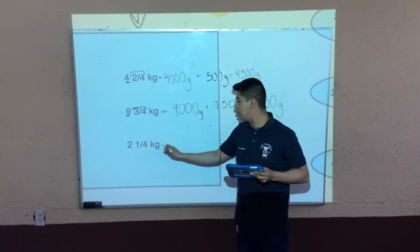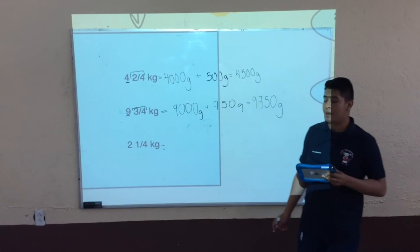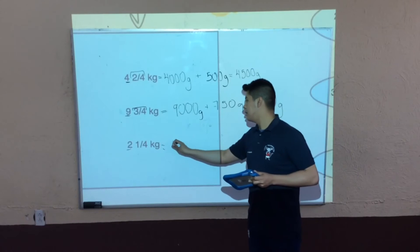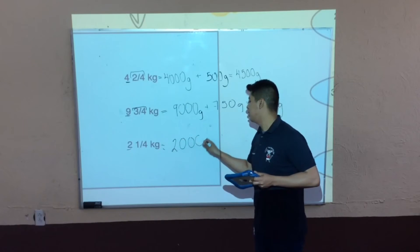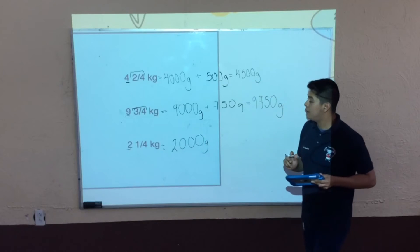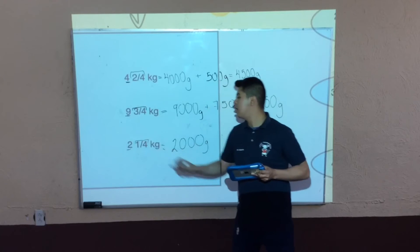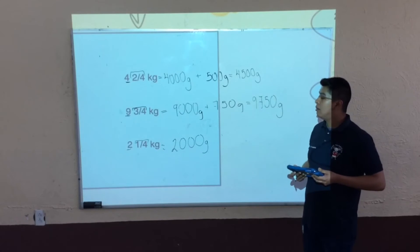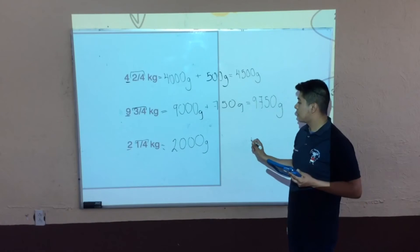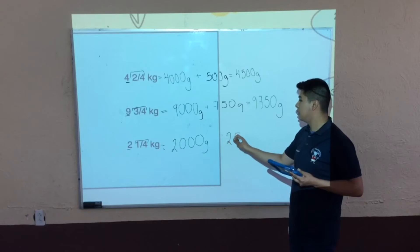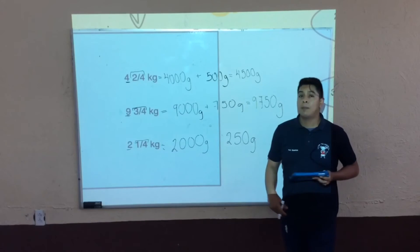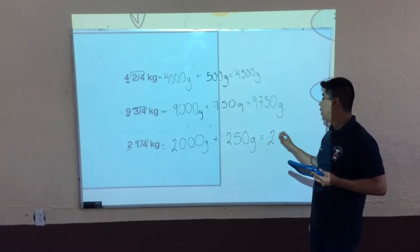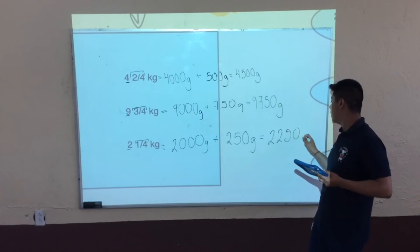Nos vamos para la última: tenemos 2 enteros con 1 cuarto de kilogramos. ¿Cuánto equivaldría esto en gramos? Equivaldría a 2000 gramos. Ya tenemos el entero. Ahora nos vamos con la fracción: ¿cuánto equivale un cuarto de kilogramos a gramos? Equivale a 250 gramos. Para concluir, realizamos la suma y tenemos en total 2250 gramos.